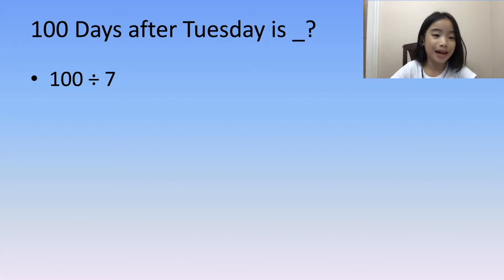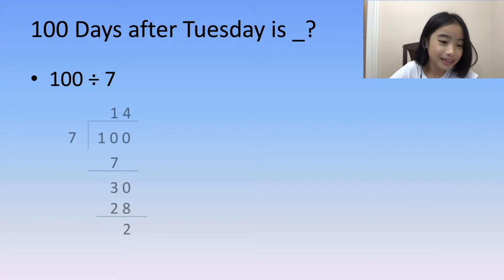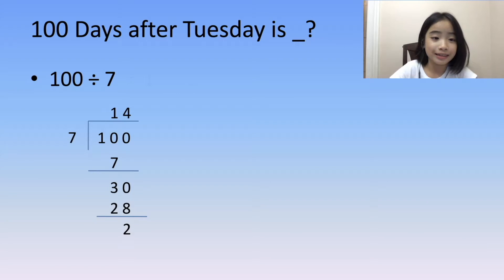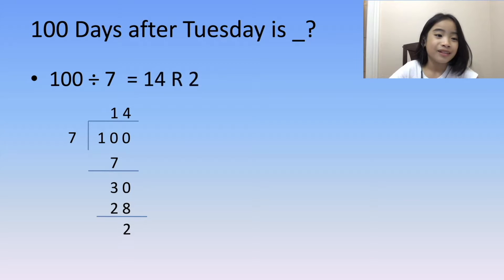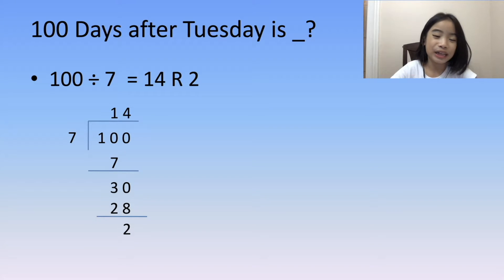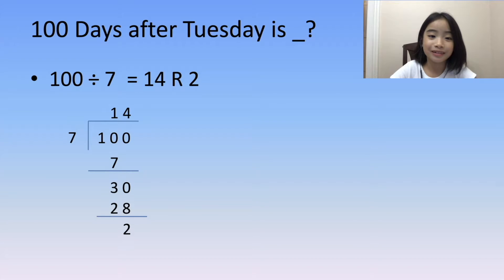100 divided by 7. Here is my long division. 100 divided by 7 equals 14 remainder 2.